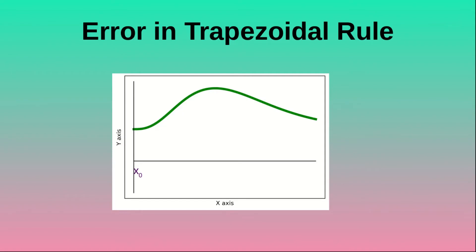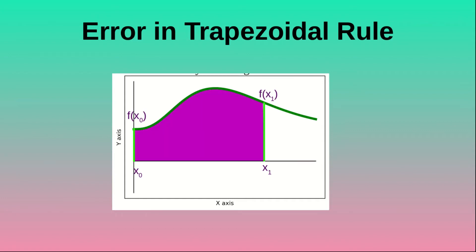Now let's talk about the errors associated with the trapezoidal rule of numerical integration. This is the same function which we considered earlier, with the same x0, f(x0), x1, and f(x1). Once again, if we perform the integration analytically we will be evaluating this violet area. Now performing the integration using the trapezoidal rule, we will be getting this deep blue colored area. There is the violet area which is above the blue trapezoid but below the green line — this is known as the error of the trapezoidal rule. As we can see, this error is quite a lot, so we need to find a way to reduce this amount of error.